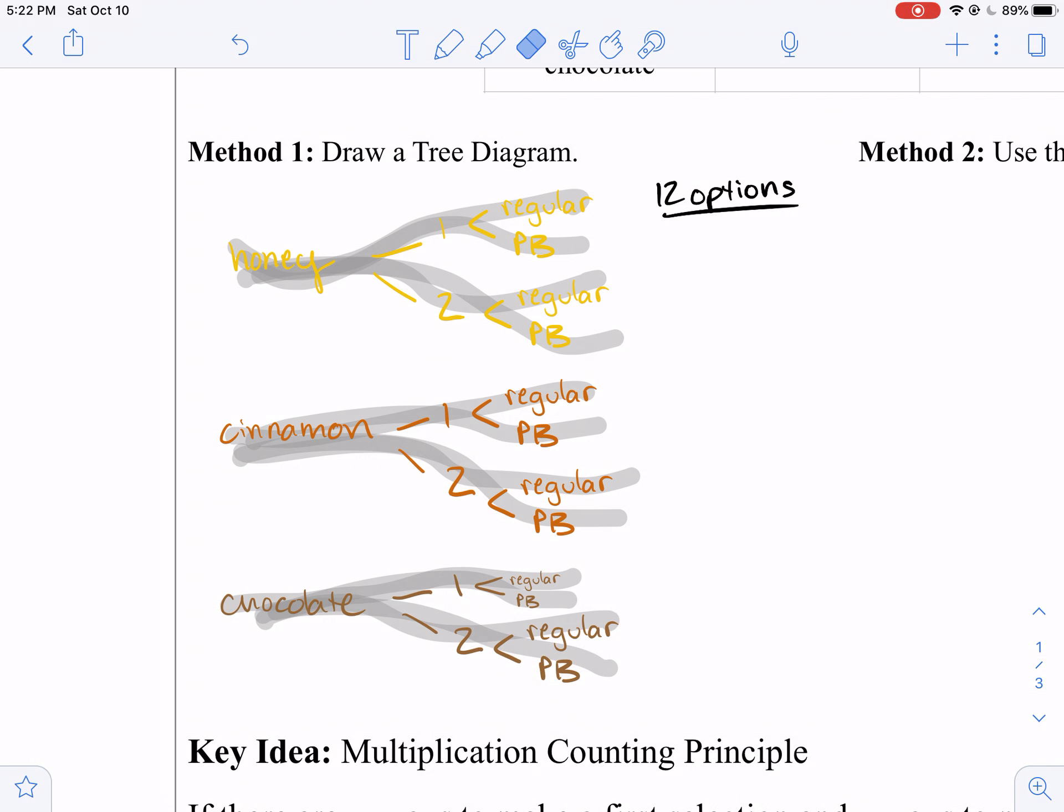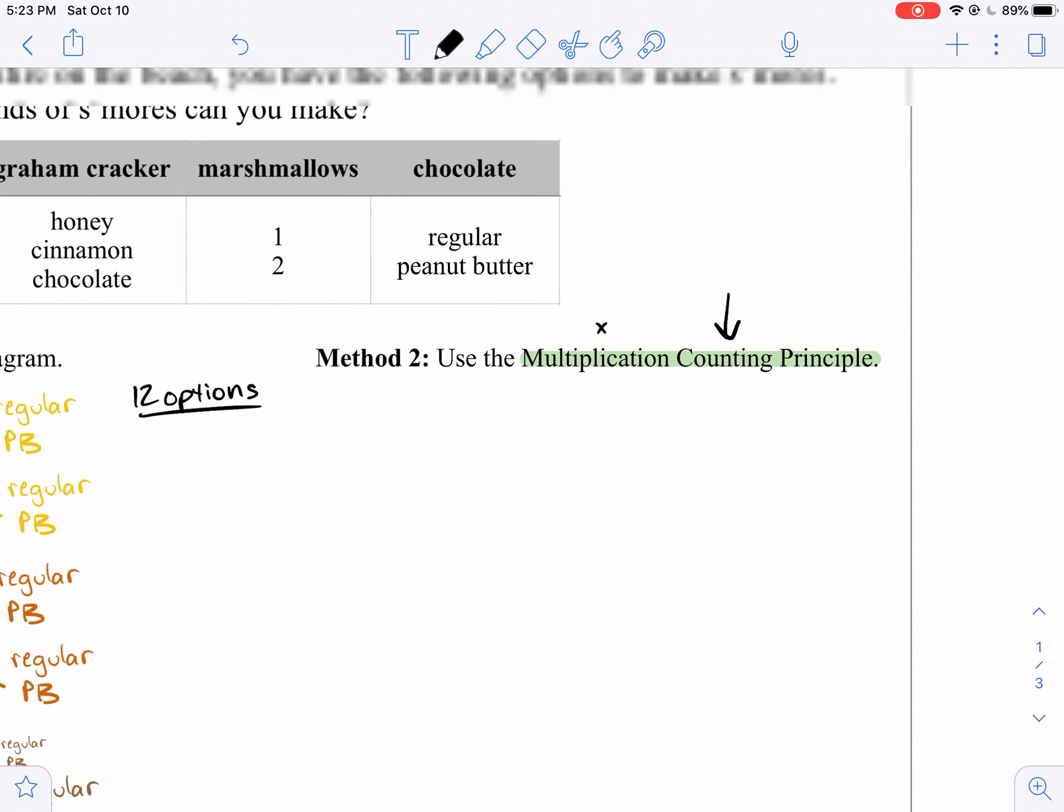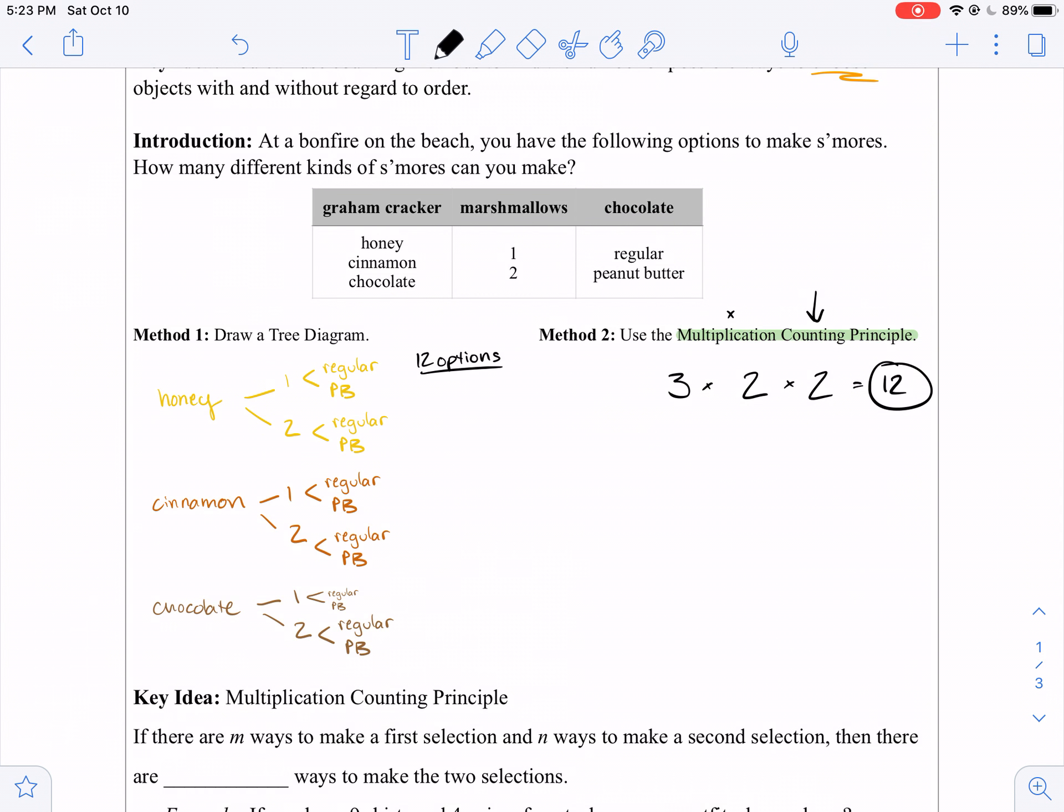However, there's a much faster way to do this. And the faster way is called the multiplication counting principle. If we were to use the multiplication counting principle, we would just count up our options and then multiply them together. So for our options of graham cracker, we've got 3. For our options of marshmallows, we've got 2. And for our options of chocolate, we've got 2 options. We multiply across and we get 12 options.